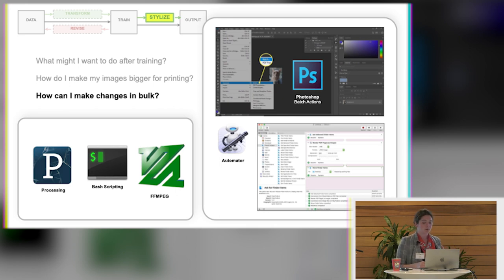On Macs, Automator is also good for bulk image processing. Or, you know, scripting file names. That sort of thing. But there's also lots of resources that are code based. Those were just two I wanted to share that are no code.